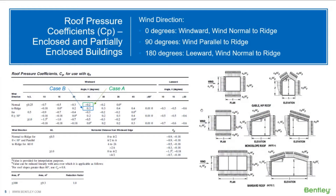Before we create the wind load definitions for the roof areas of our enclosed building structure, let's first take a look at how RAM Elements will calculate the design wind pressures. RAM Elements uses ASCE 7-16 chapters 26 and 27 to calculate the design wind pressure for building structures. Since all wind calculations closely follow the code requirements, it is recommended that you are familiar with the ASCE 7 and have access to the code while creating wind definitions to ensure that all parameters are set appropriately and all pressure types and wind directions are accounted for.